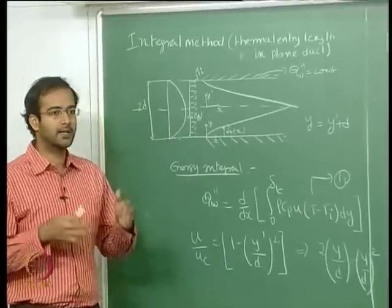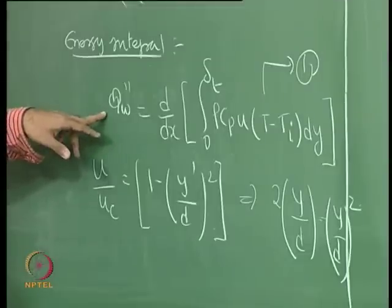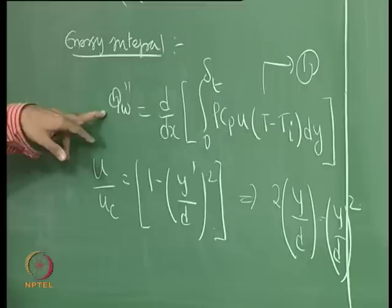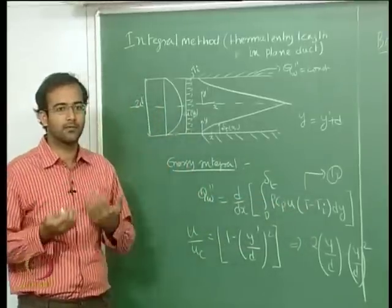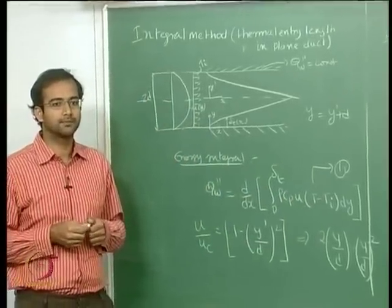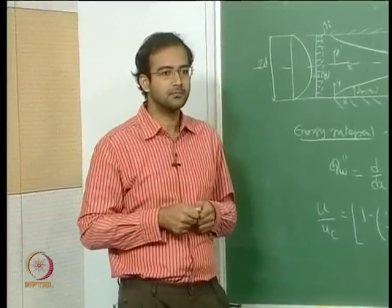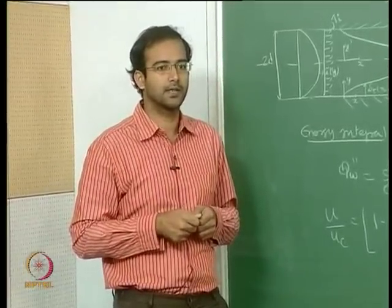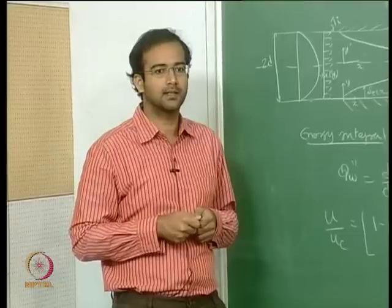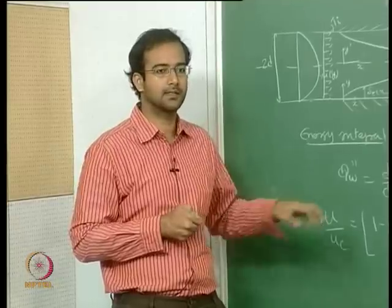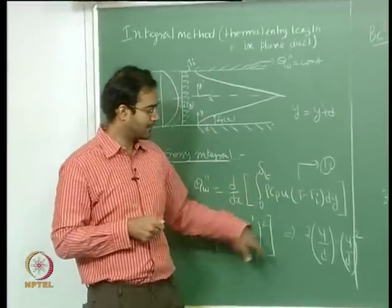If you integrate the energy equation it is a very straightforward integration — you directly get the energy integral, which is equation number one. All you need to do is know the velocity profile and guess some profile for the temperature. The velocity profile here is coming from the exact solution because you cannot use an integral method solution in the fully developed region. Once the boundary layers merge, the integral method cannot be applied because these are all boundary layer equations.